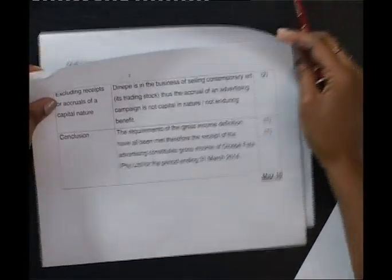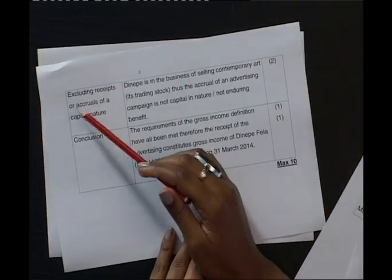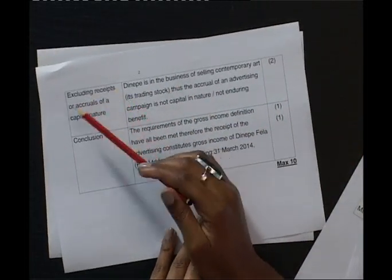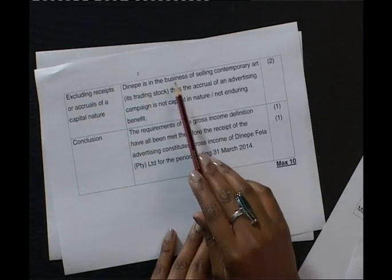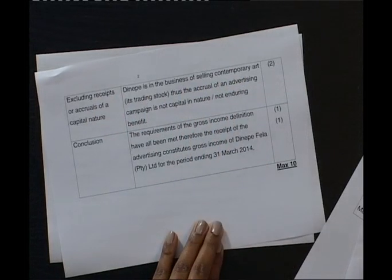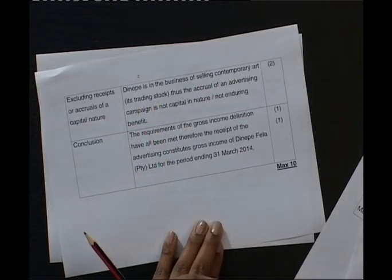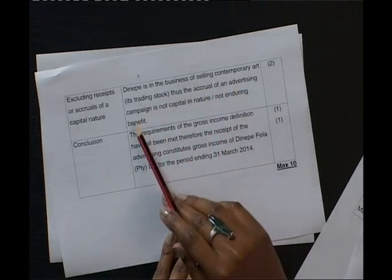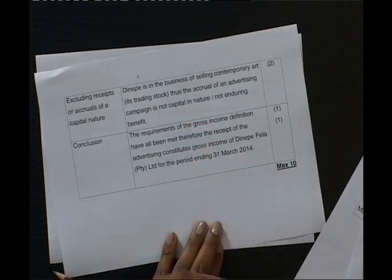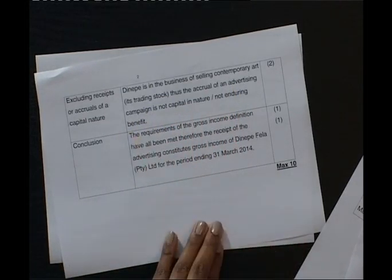The next part of our definition says that these receipts must exclude receipts or accruals of a capital nature. Dinepe is in the business of selling contemporary art, and contemporary art is their trading stock. Therefore, the accrual of the advertising campaign is not capital in nature — in other words, there is no enduring benefit.